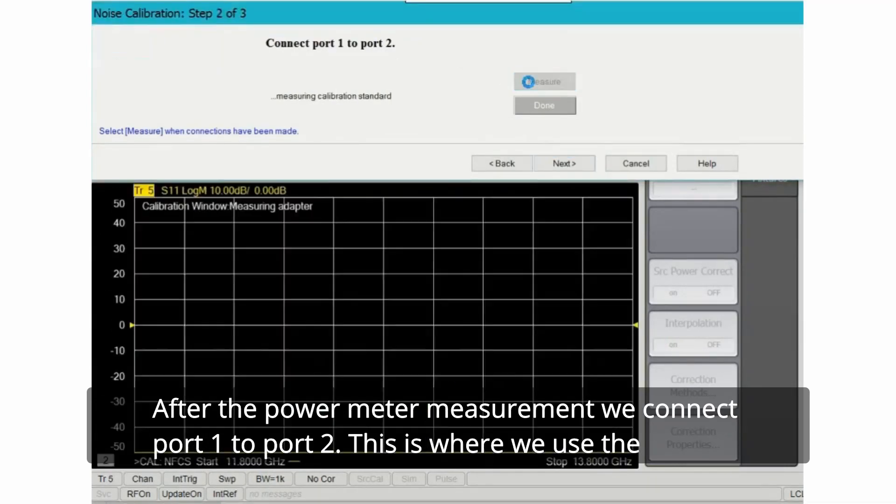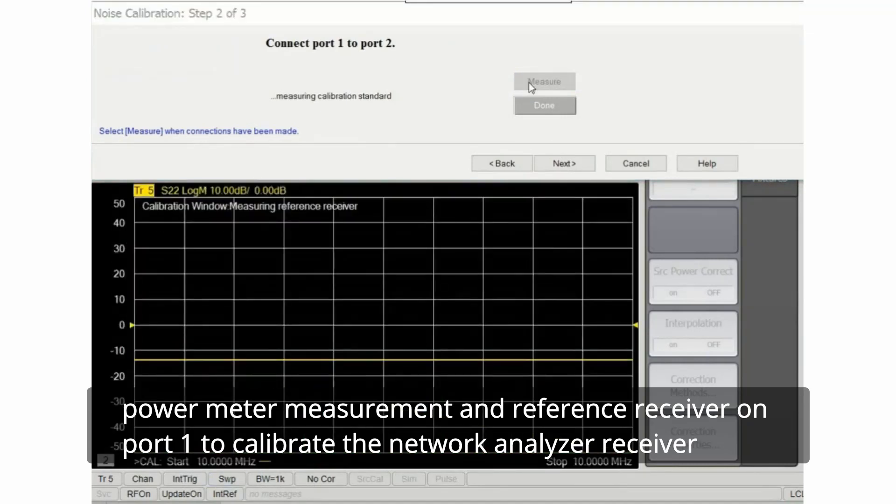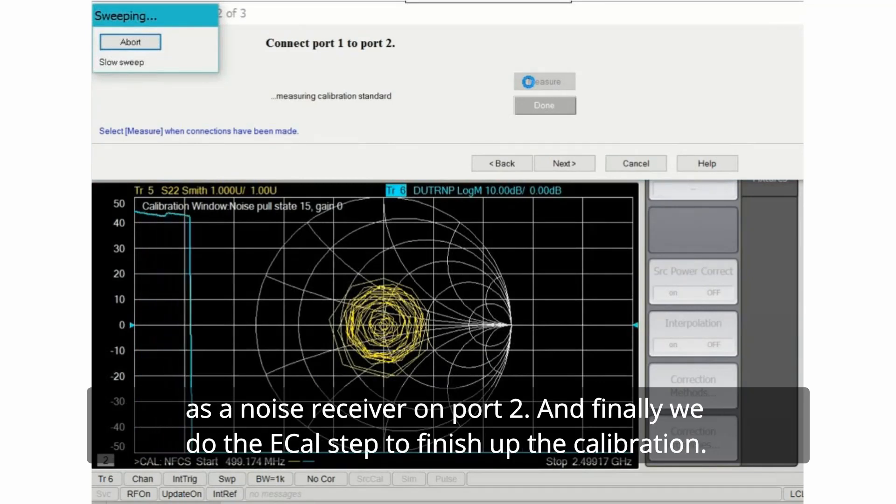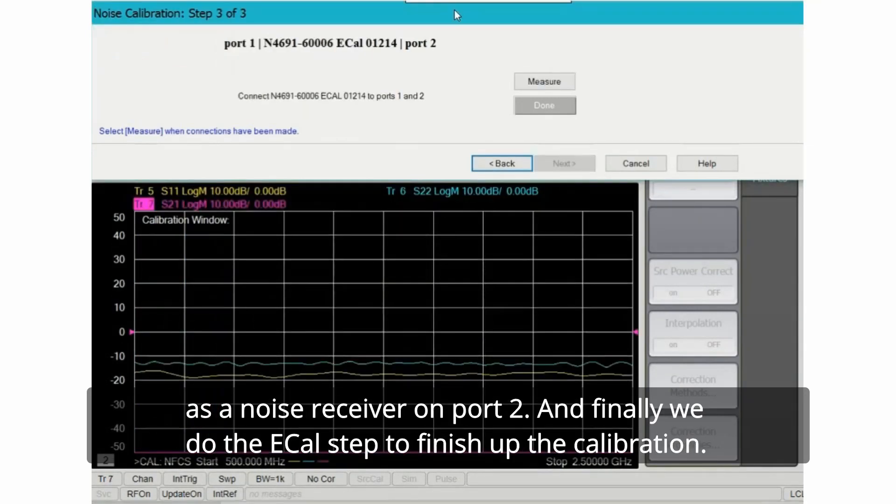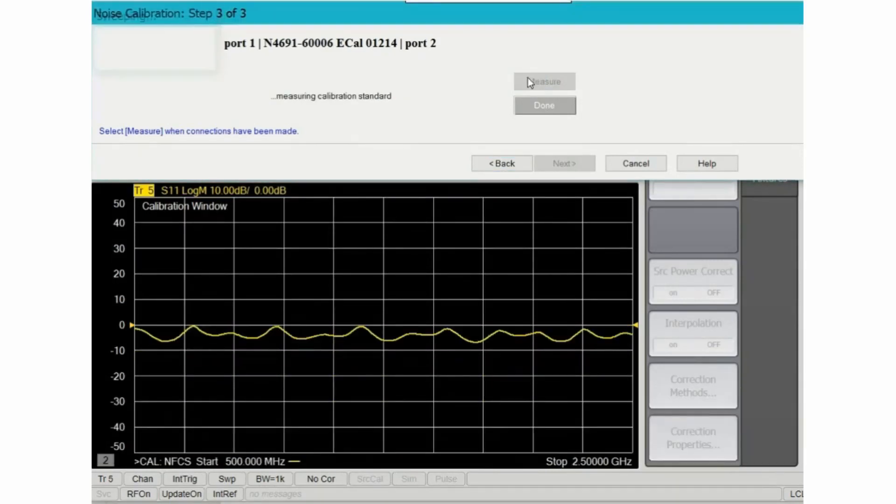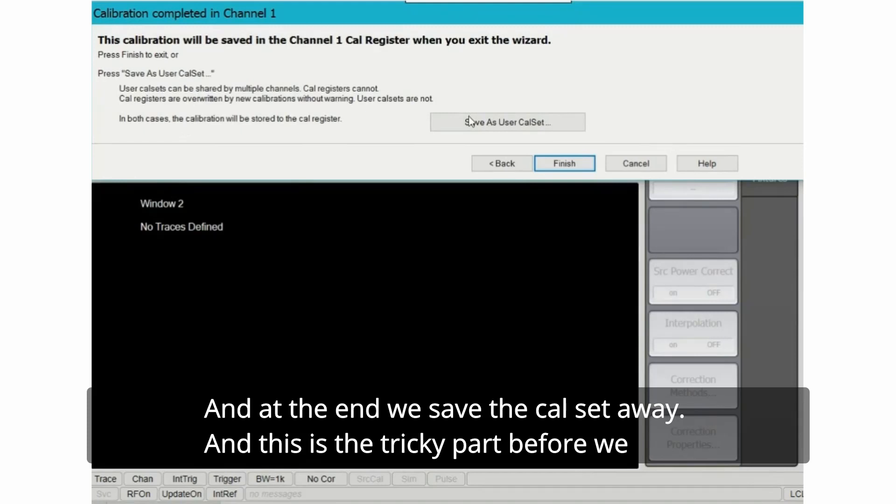After the power meter measurement, we connect port 1 to port 2. This is where we use the power meter measurement and a reference receiver on port 1 to calibrate the network analyzer receiver as a noise receiver on port 2. And finally we do the ECAL step to finish up the calibration.